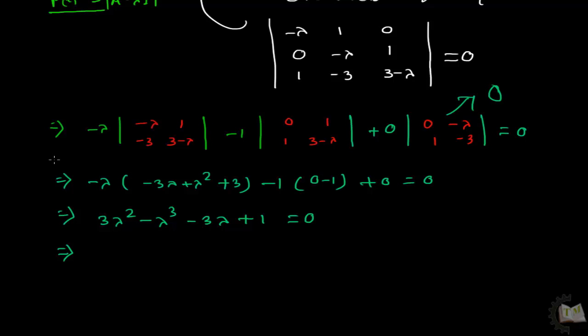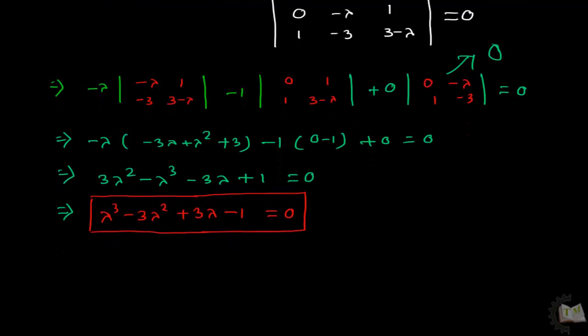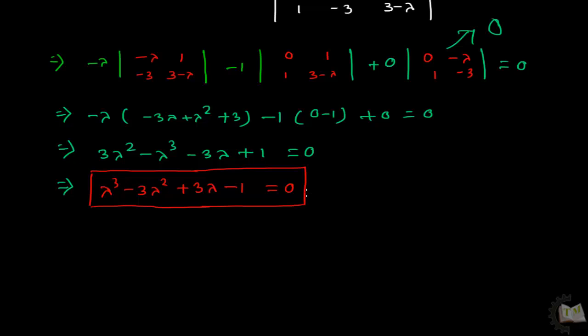Make the coefficient of lambda cubed positive. Multiply minus 1 on both sides to get lambda cubed minus 3 lambda squared plus 3 lambda minus 1 equals 0. Arrange the equation in decreasing order of the power of lambda.